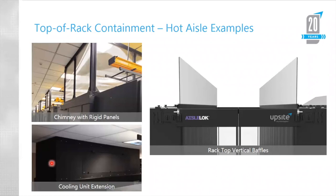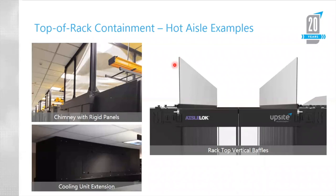This darker image shows a cooling unit extension — essentially a chimney on top of the cooling unit, but the air flows in the opposite direction, through the ceiling plenum and then down into the cooling unit. And here's the modular or partial containment example for hot aisle containment, which uses vertical baffles to help direct hot air towards the ceiling registers. This solution can work even without vertical baffles, simply by ducting the cooling units to the drop ceiling.